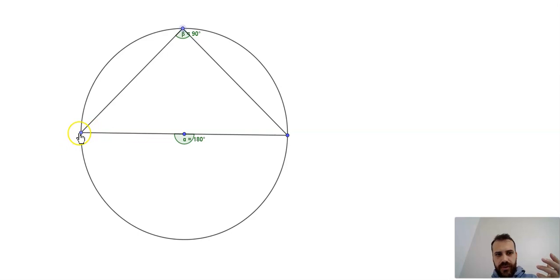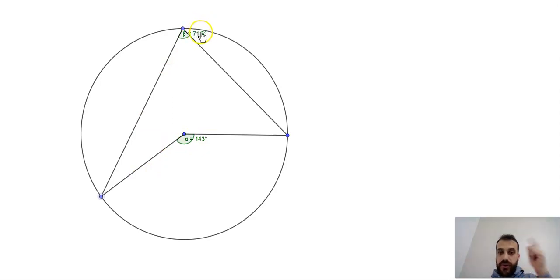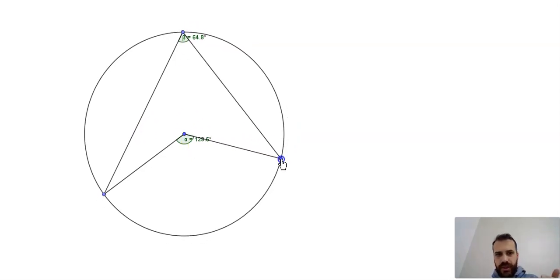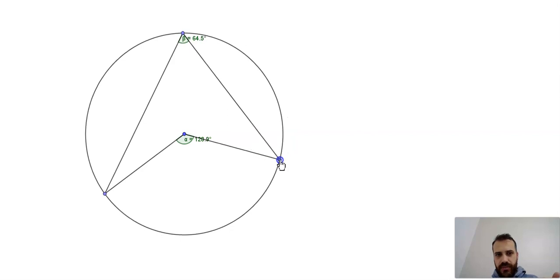Now watch what happens if I move one of these points to stop it from being a semicircle. I'm going to pick a random point here. Now we have 143 degrees and 71.5. If you do the math, this is half of that, or that is double this. Now I can move the point to a different spot. Again, try doing the math - 129 degrees for this angle, 64.5 for this angle. This is half of that, and that is what our circle theorem states.